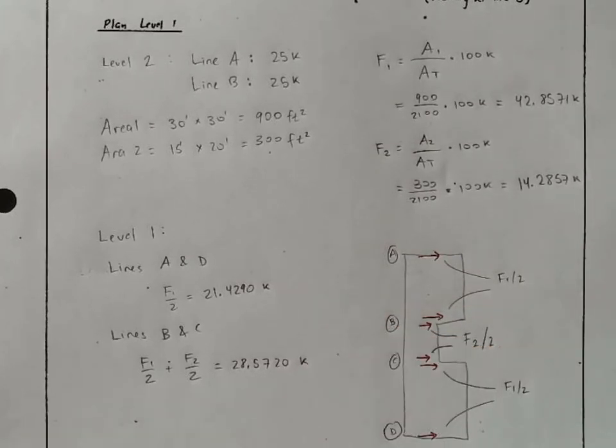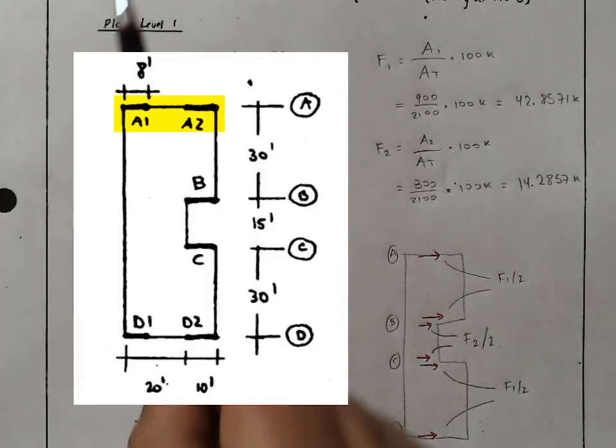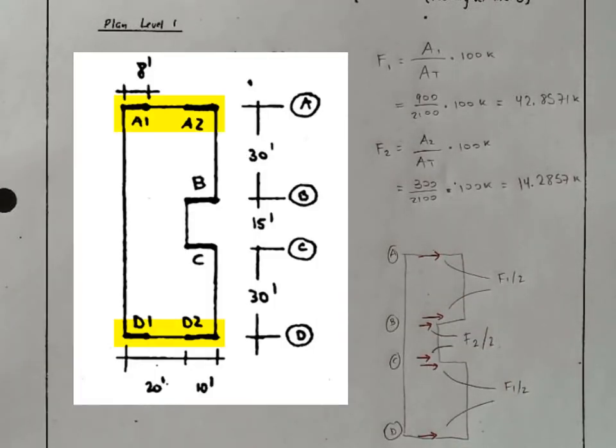So now we've finished the first part of the problem, which is to identify the forces along each line of resistance. What remains to be done, and what we'll do in a subsequent video, is to see how the forces divide out into A1 and A2, D1 and D2 on each story, and then we'll summarize the problem.